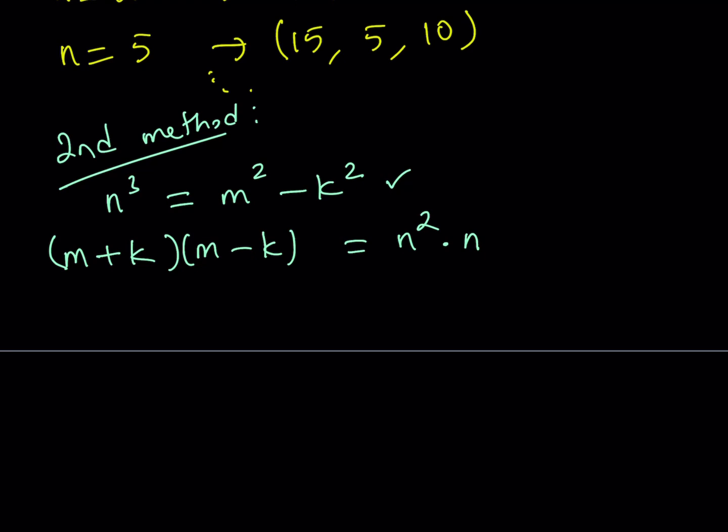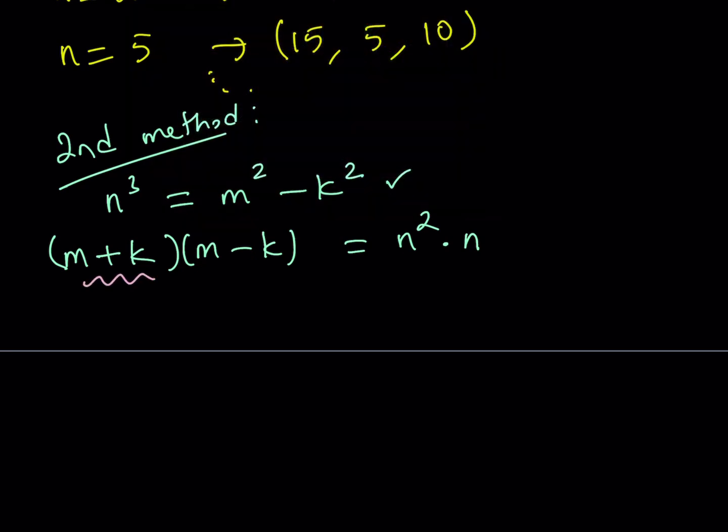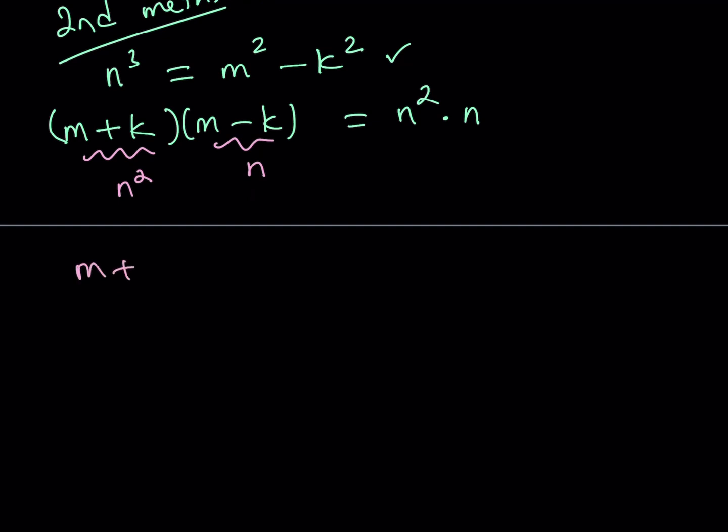Of course, n cubed can also be factored out. So let's go ahead and factor it as n squared times n. Obviously, n doesn't have to be a prime number. n can be any number. And you can break it down in different ways. But here's what we can get from here. m plus k, obviously, since m and k are positive integers, m plus k is going to be greater than m minus k. Think about it. The difference is going to be less than the sum. So I can kind of compare these two and say, okay, what happens if m plus k is equal to n squared and m minus k is equal to n? Is that the only way to do it? Something to think about. Are there any other solutions? Something to think about.